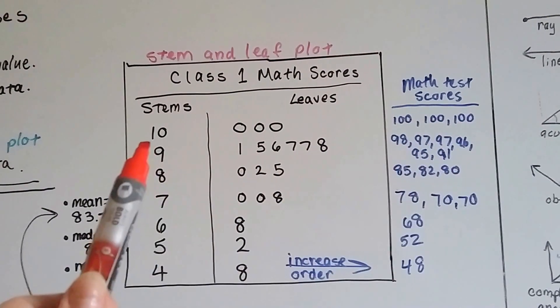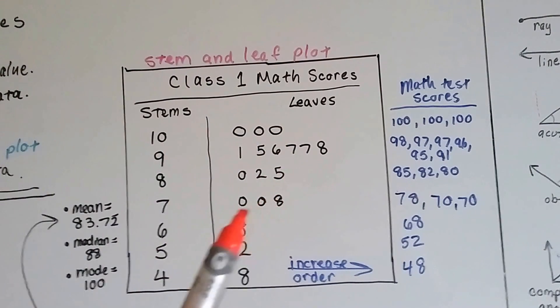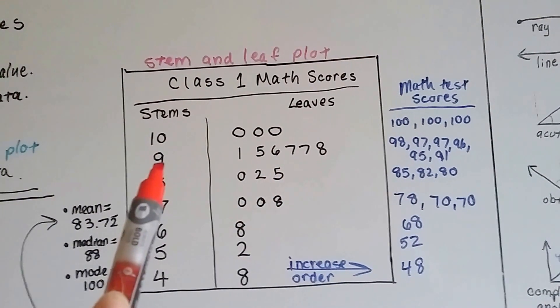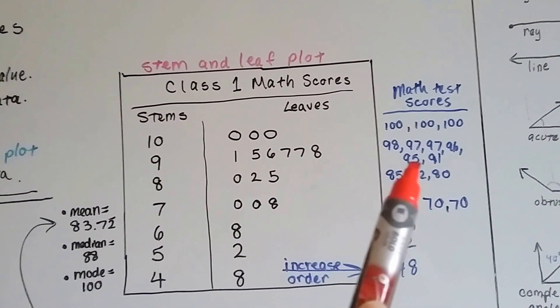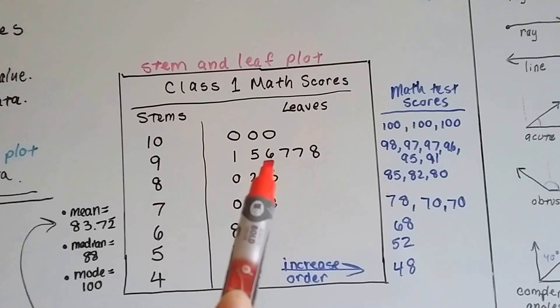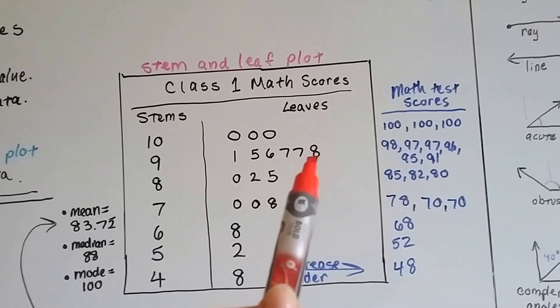So the scores for 100, 100, and 100 are the stem is a 10 and 0, 0, 0. For the scores that were in the 90s, there's a 91, a 95, a 96, a 97, a 97, and a 98. So here's the stem, the tens place, and here's the ones, the leaves.